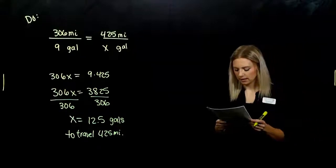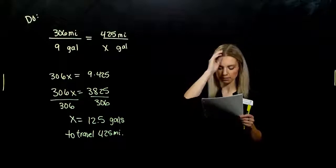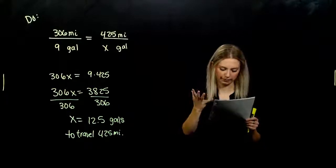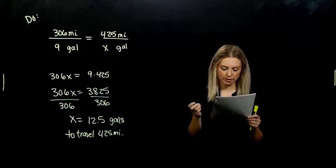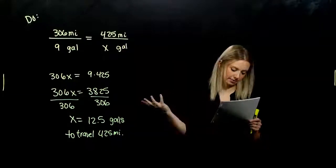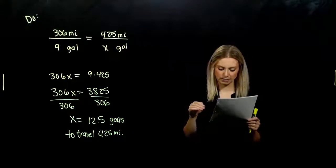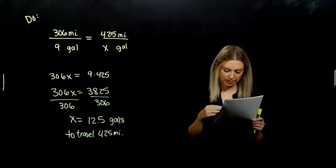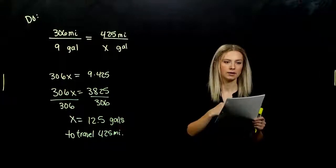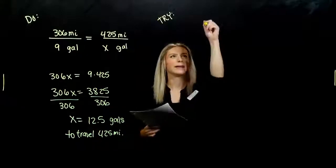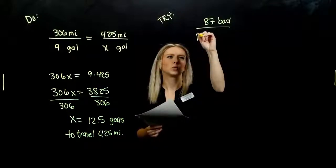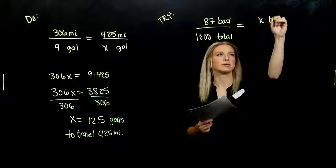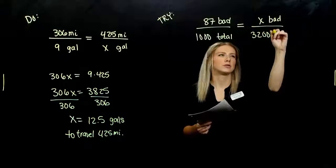Go ahead and try the next one. A company that prepares and sells gift boxes and baskets of fruit must order quantities of fruit larger than what they need to allow for selecting fruit that meets their quality standards. The packing room supervisor keeps record and notes that approximately 87 pears from a shipment of 1,000 do not meet the company standards. Over the holidays, a shipment of 3,200 pears is ordered. How many pears can the company expect will not meet the quality requirement? How did you set that one up? We had 87 bad pears in a batch of 1,000, and I'm trying to figure out how many bad pears am I going to get in a shipment of 3,200 in total.